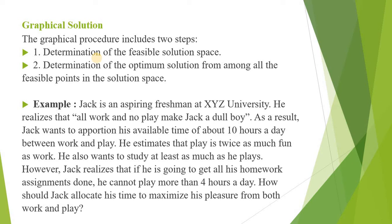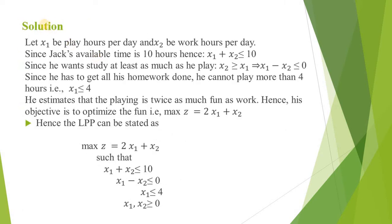Let x1 be the play hours per day and x2 be the work hours per day. Since Jack's available time is 10 hours, x1 plus x2 should be less than or equal to 10. Since he wants to study at least as much as he plays, x2 should be greater than or equal to x1, or x1 minus x2 is less than or equal to 0. Since he cannot play more than 4 hours, x1 should not exceed 4 hours. He estimates that playing is twice as much fun, so his objective is to maximize z equals 2x1 plus x2. Hence, the LPP can be stated as: maximize z equals 2x1 plus x2 such that x1 plus x2 is less than or equal to 10, x1 minus x2 is less than or equal to 0, x1 is less than or equal to 4, and x1 and x2 should be non-negative.